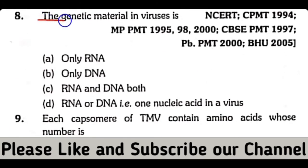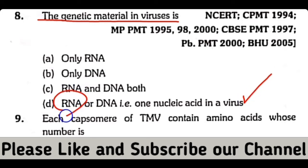Question number 8. The genetic material in viruses contains only RNA, only DNA, RNA and DNA both, or one nucleic acid in a virus. So the correct answer is option D. Viruses کے اندر genetic material یا تو RNA کی فارم میں ہوگا یا پھر DNA کی فارم میں — یعنی دونوں میں سے کوئی ایک ہو سکتا ہے.